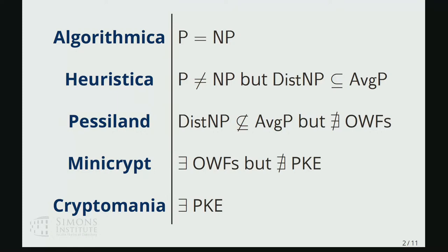And if you're a classical cryptographer, you generally hope that we live somewhere below this line in either Minicrypt or Cryptomania, because what characterizes whether you're above or below this line is the existence of one-way functions, which are widely seen as being the minimum computational assumption that you need in order to get interesting classical cryptography.